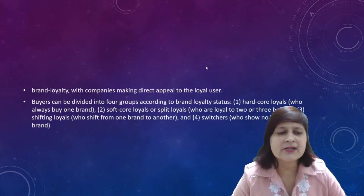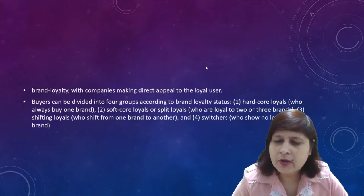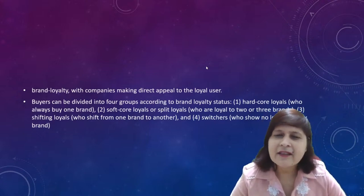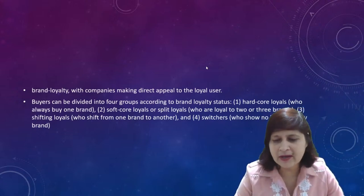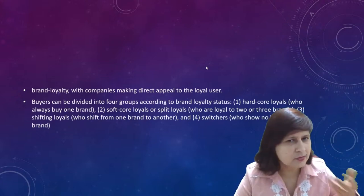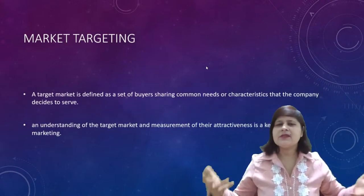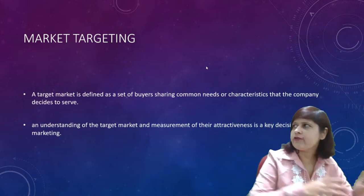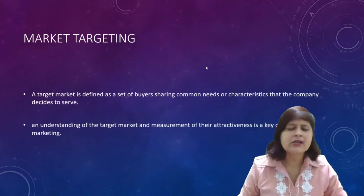Hardcore loyals always buy one brand. Softcore loyals are loyal to two or three brands. Shifting loyals shift from one brand to another. Switchers show no loyalty to any brand. Segmentation is the division of a heterogeneous market into homogenous subclasses.